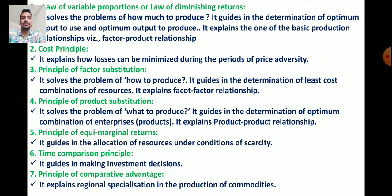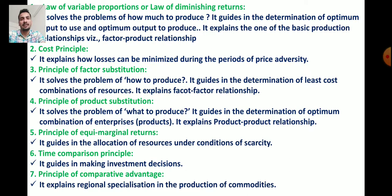Keep in mind: the Law of Variable Proportion or Law of Diminishing Returns explains the factor-product relationship, whereas the principle of factor substitution explains the factor-factor relationship.